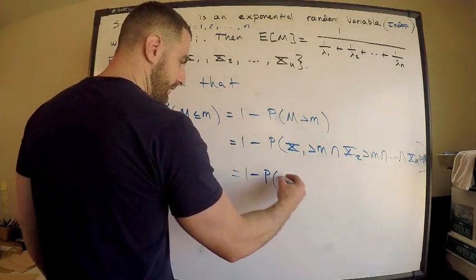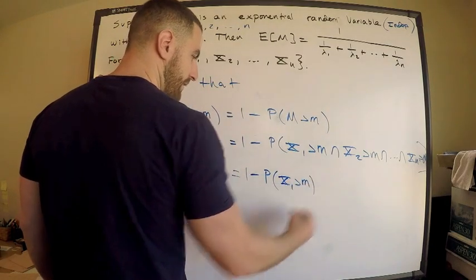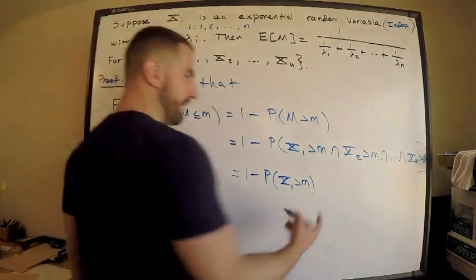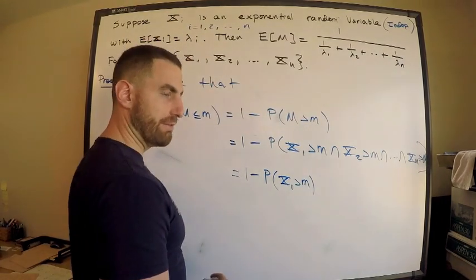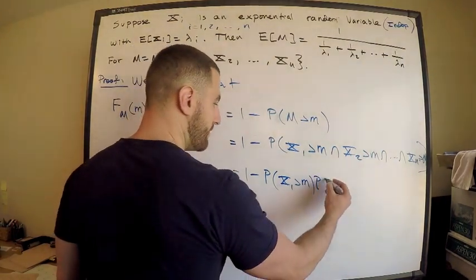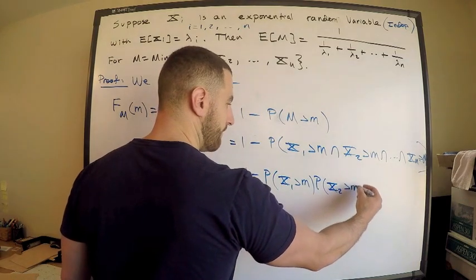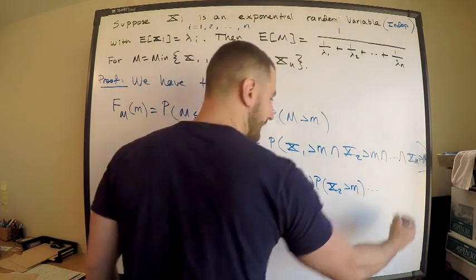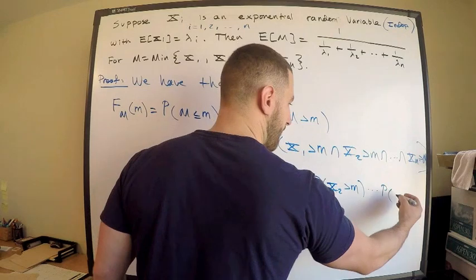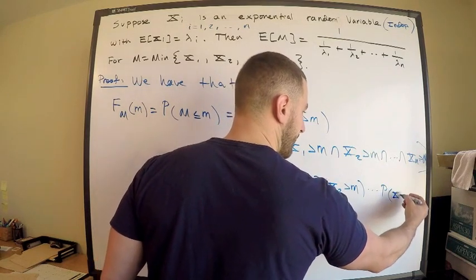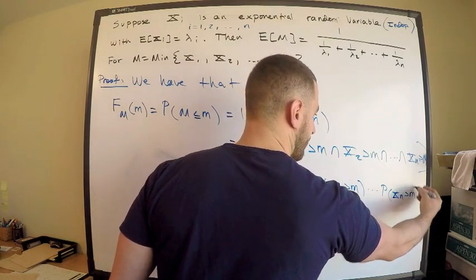Now we use independence. We need that because now this says that this is 1 minus the probability that X_1 is strictly greater than m, times - intersection turns to multiplication when the random variables are independent - times the probability that X_2 is greater than m, all the way to the probability that X_n is greater than m.